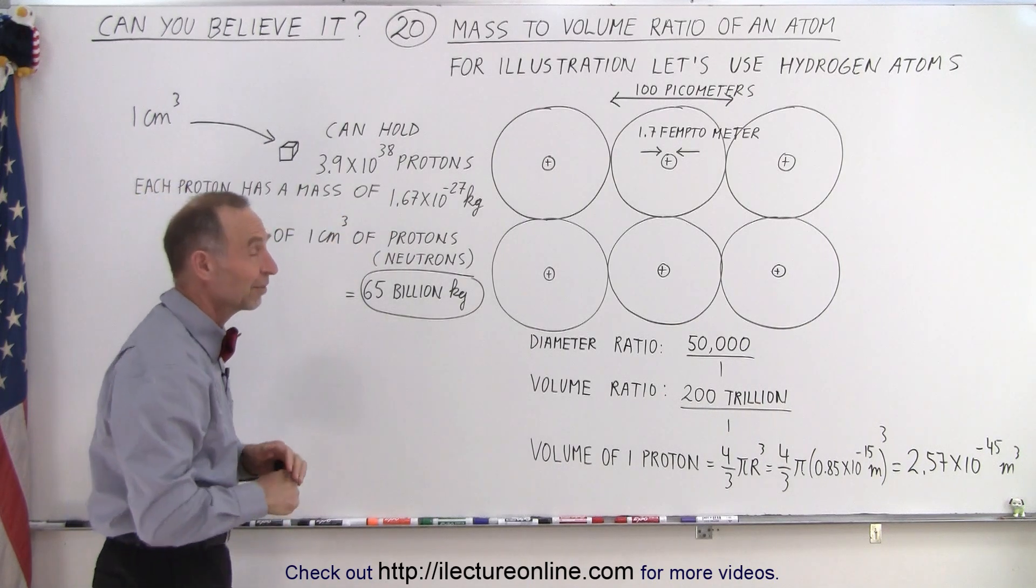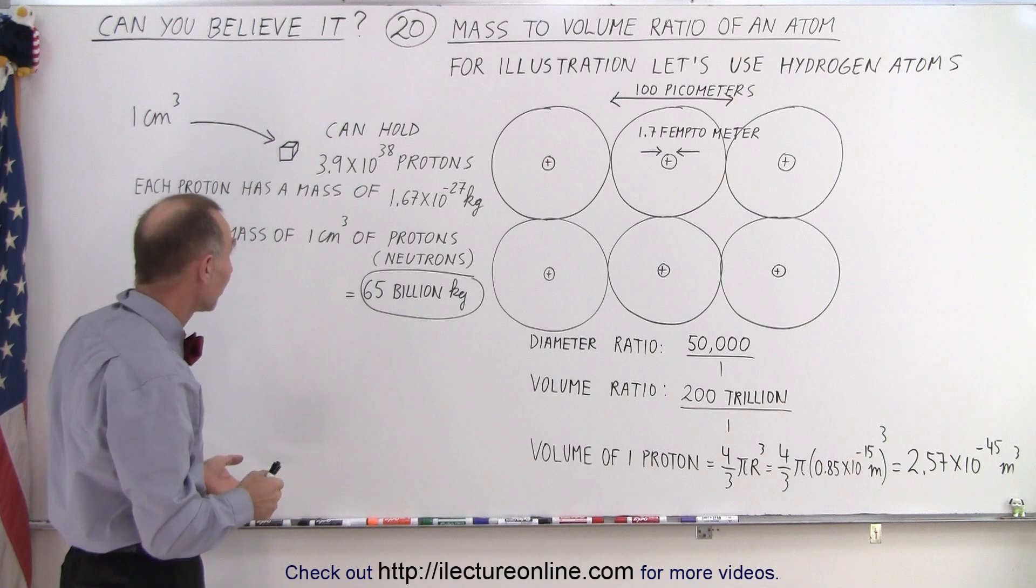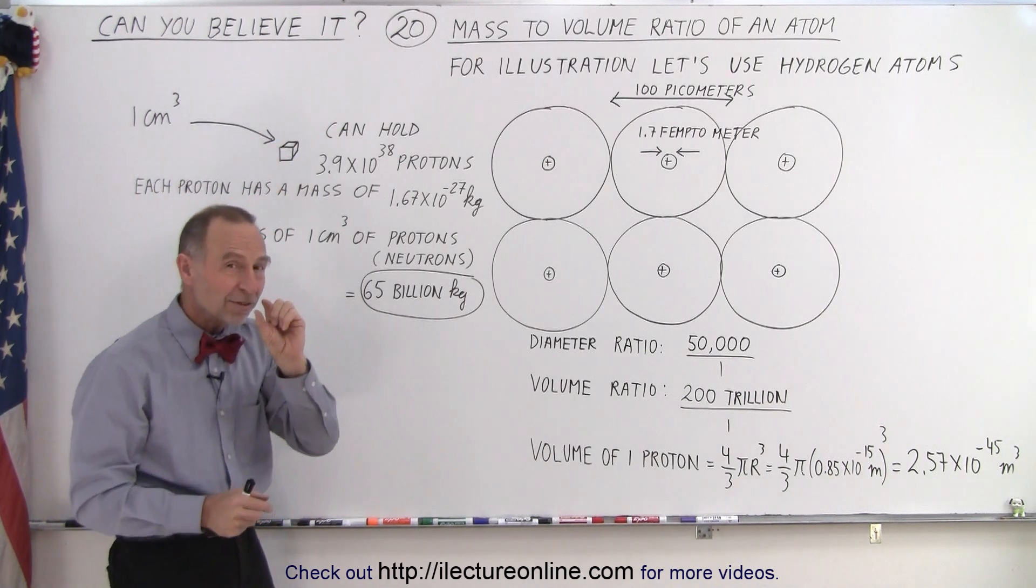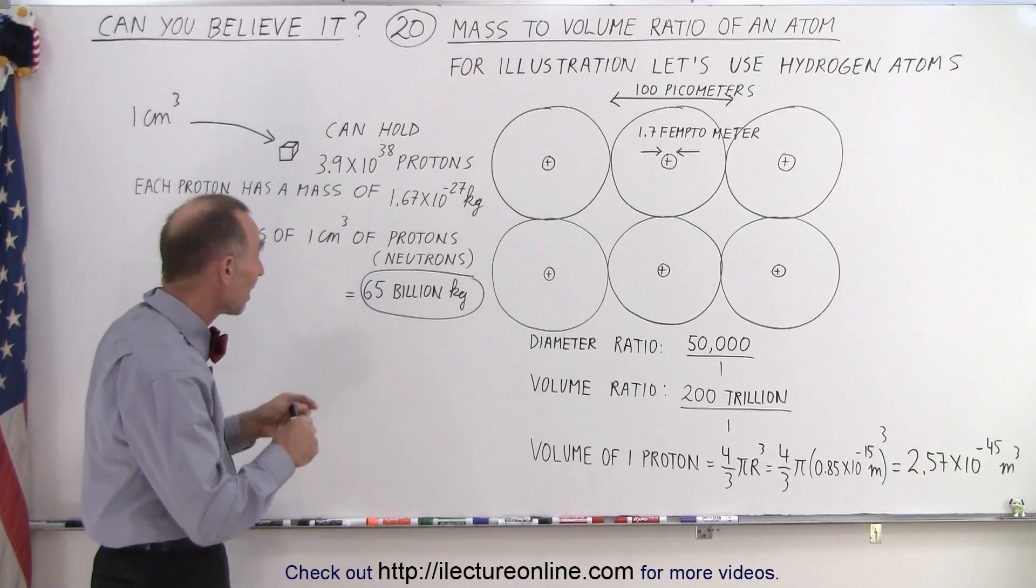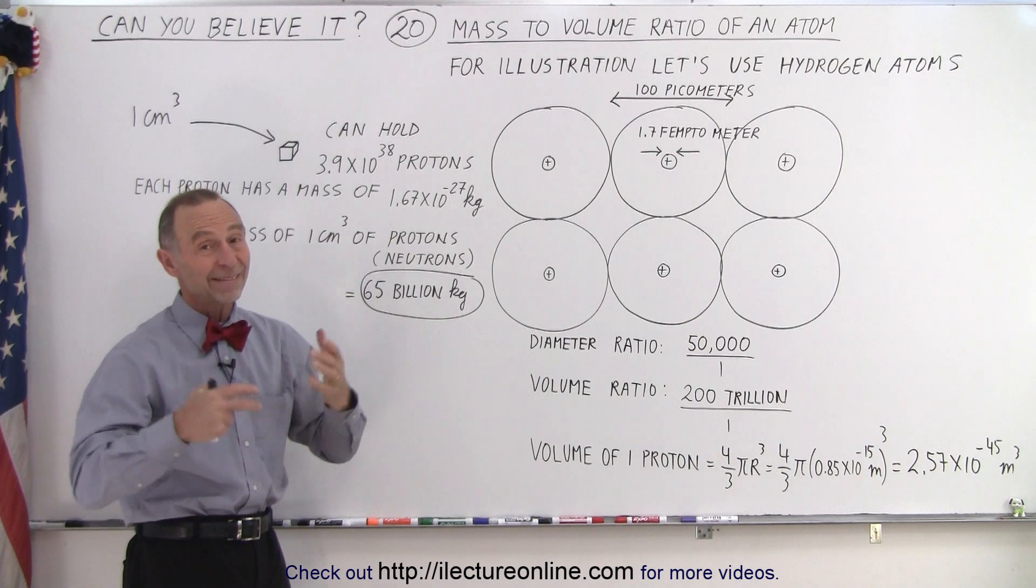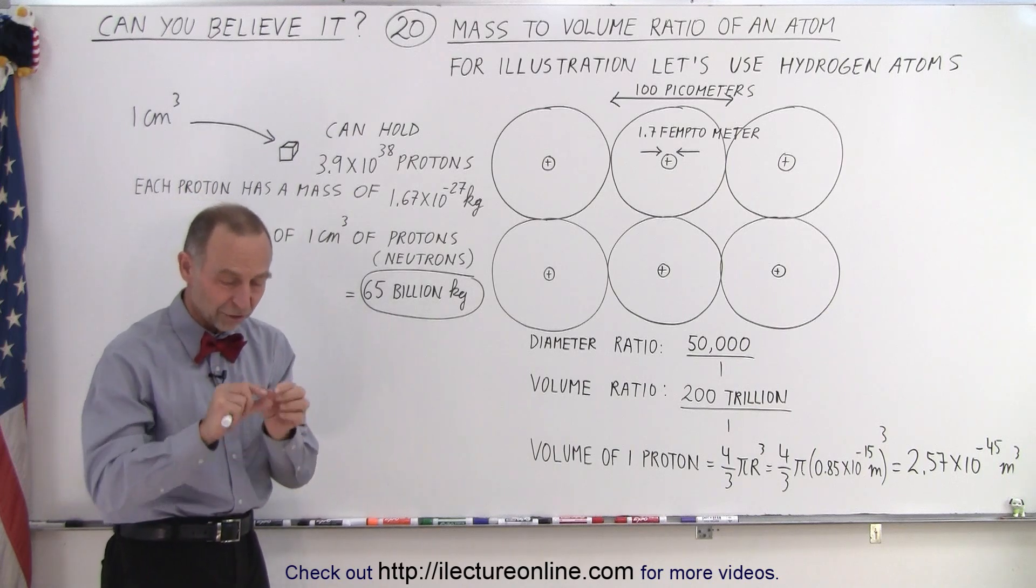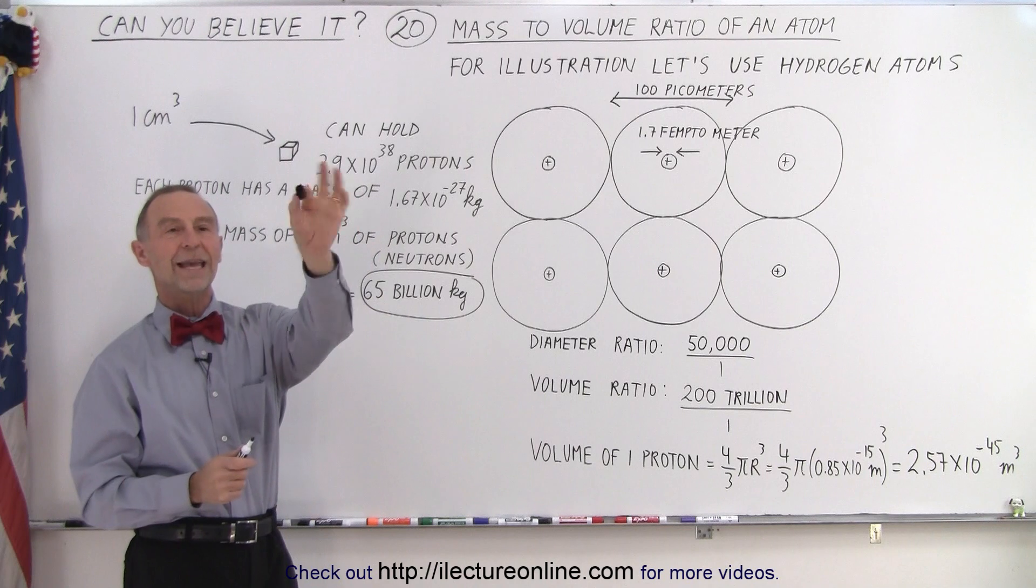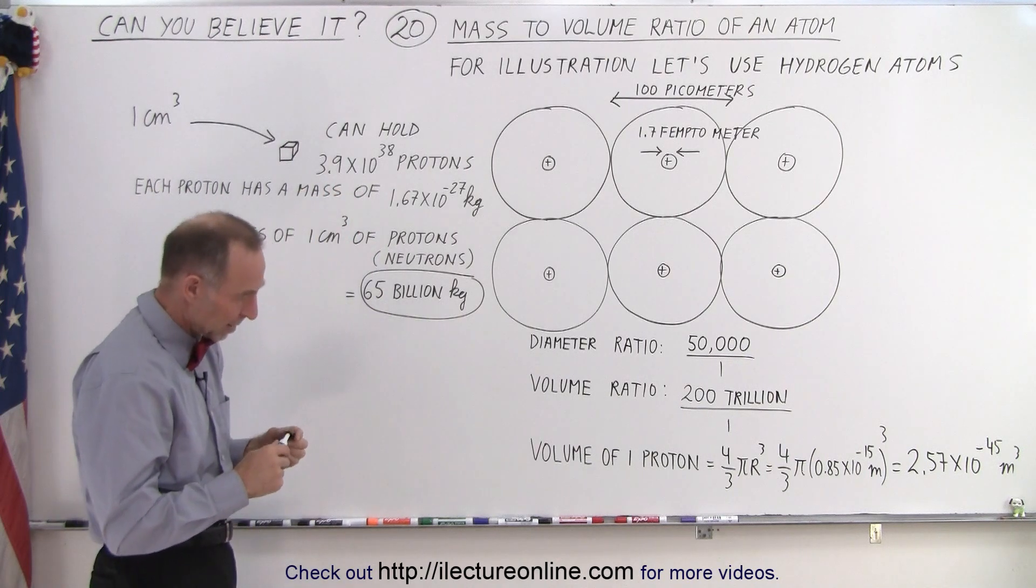And then realizing that each proton has a mass of about 1.67 times 10 to the minus 27 kilograms, well that means that if you fill one cubic centimeter up with protons you'd have a mass of about 65 billion kilograms, or about 65 million tons stuffed into a little volume actually smaller than the tip of a pen. Wow.